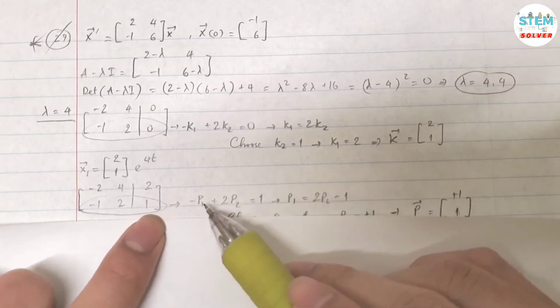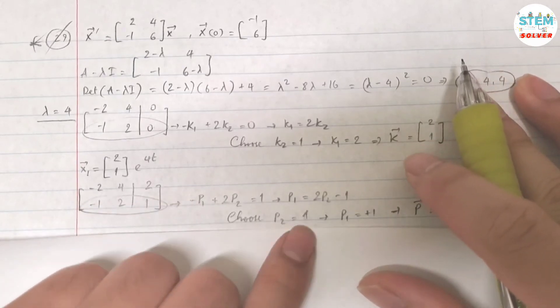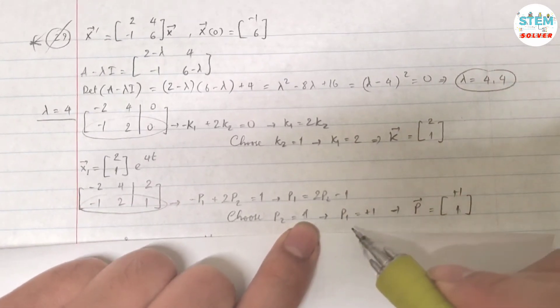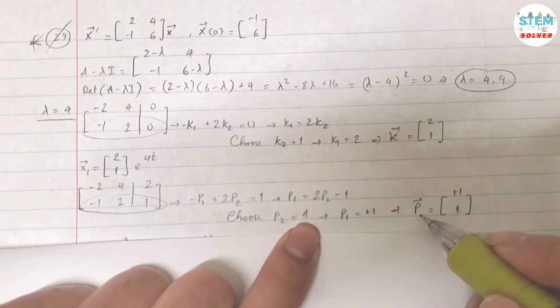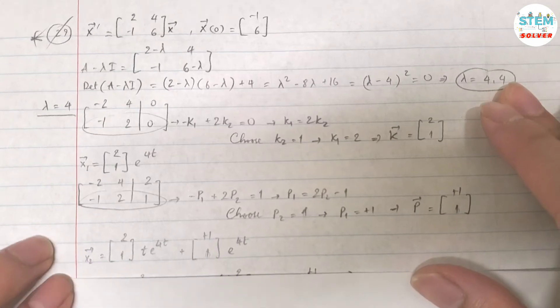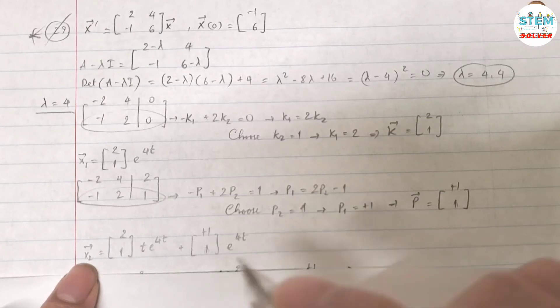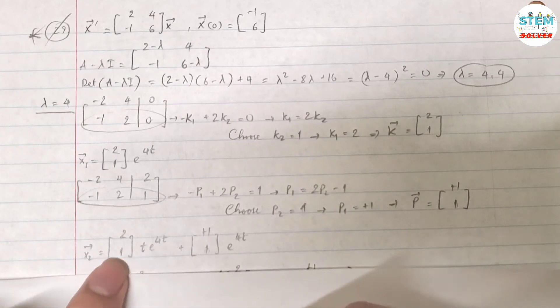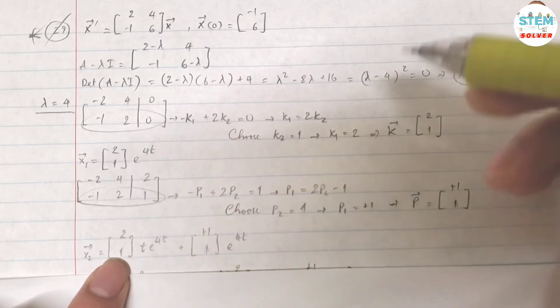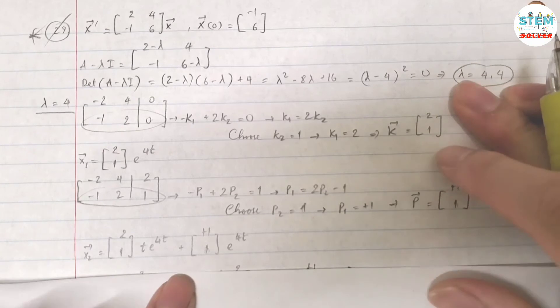From the second equation I have negative p1 plus 2p2 equals 1. Solve for p1, I got 2p2 minus 1. If I choose p2 equals 1, then I found out p1 is 1. Then my vector p is [1, 1]. Now it's time to write out. Once I know vector p, I can write my second answer which is vector x2 equals k times t e to the 4t plus p times e to the 4t.